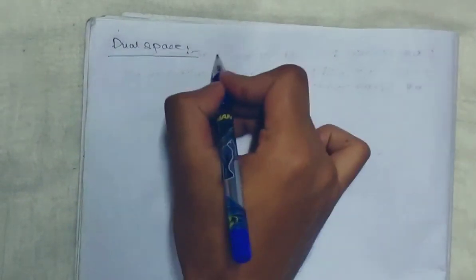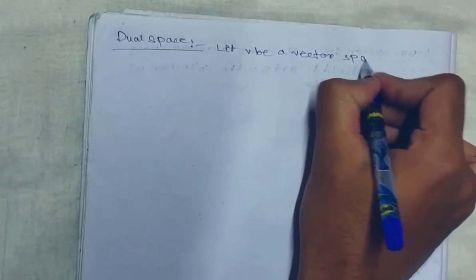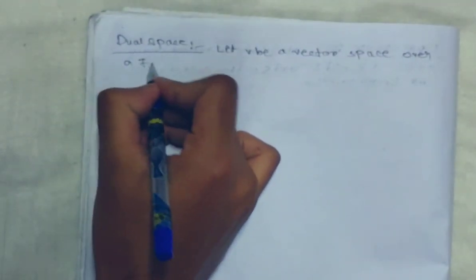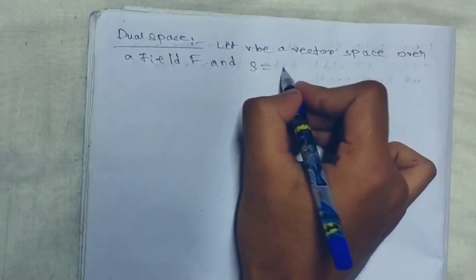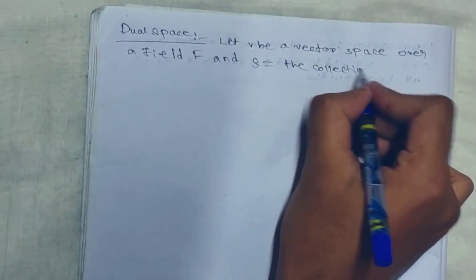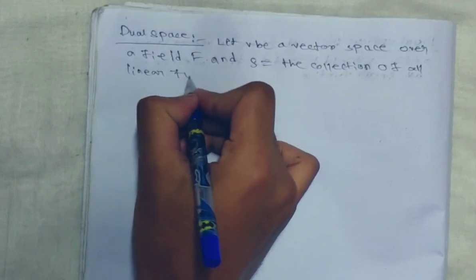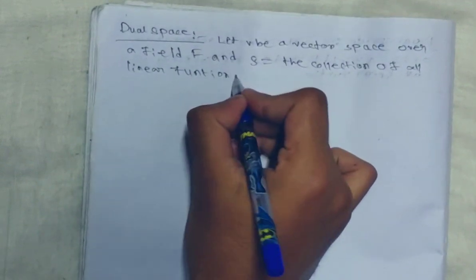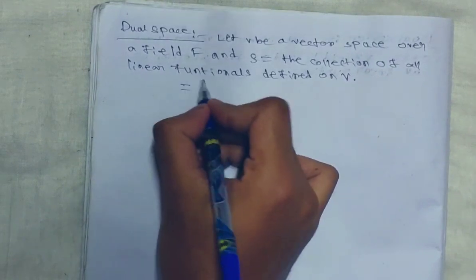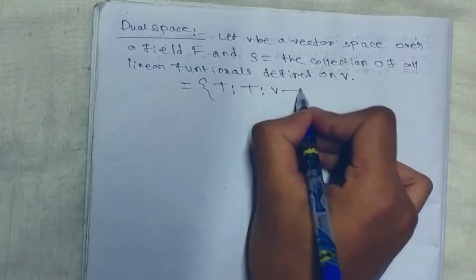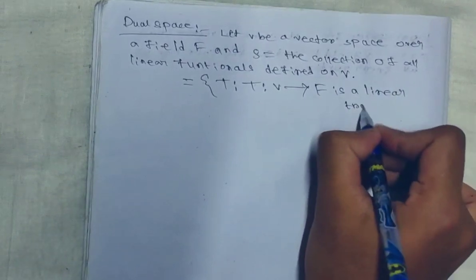Today we are going to start dual space. First of all, the definition. Let V be a vector space over a field F, and S equals the collection of all linear functionals defined on V. That is, S equals the set of T such that T: V → F is a linear transformation.